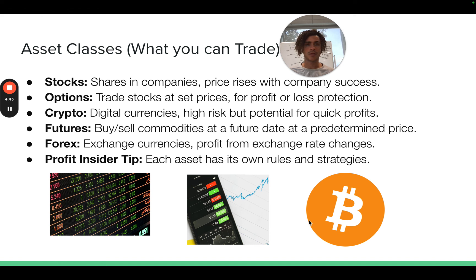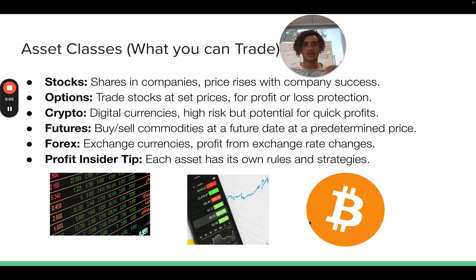Forex is currencies. The Forex market is the largest market in the world. You are trading foreign currency pairs — you could trade the U.S. dollar versus the Japanese yen, or the euro versus the U.S. dollar. You profit when one currency in the pair rises. For example, if the price of the euro rises and you're trading euro/USD, you make money. You can also short it, betting that the price of euro/USD will go down and making money when it does.